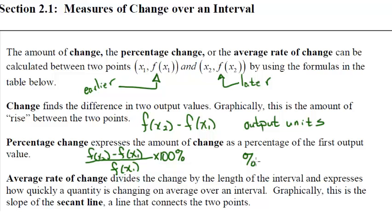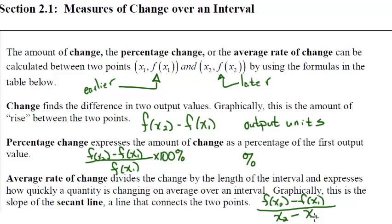Average rate of change we've looked at when talking about slope. This is output later minus output earlier — that's the rise — divided by input later minus input earlier, which is the run. You can think of this as slope, and graphically it is the slope of the secant line — the line that connects two points.